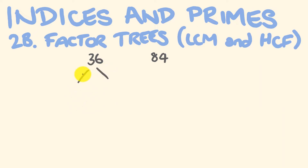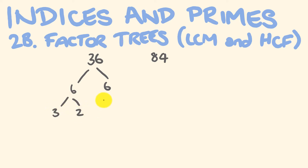The way that we do these is as follows — we're looking for numbers that go into both of these. So 36: 6 times 6 is equal to 36. You could also do 12 times 3, but you choose whichever one — we're going to end up with the same answer in the end. Now these are both composite numbers so we can take these even further. The numbers going into 6 are 3 and 2, and 3 and 2. Now we've hit the stage where all these numbers are prime, so we can't take them down any further.